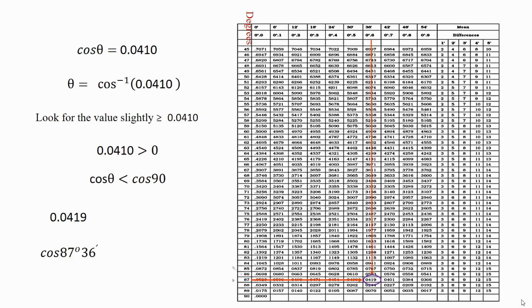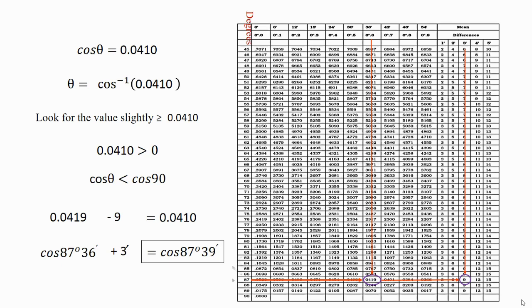So we note it as cos(87°36'). Now, from 0.0419 we need to subtract 9 to get our required value 0.0410. From the mean difference part, along the same 87-degree row, we can observe 9 under 3 minutes. So we add 3 minutes to cos(87°36'), which gives the required angle cos(87°39'). We choose the value greater than or equal to the given value when finding cos inverse because we have to subtract the mean difference.